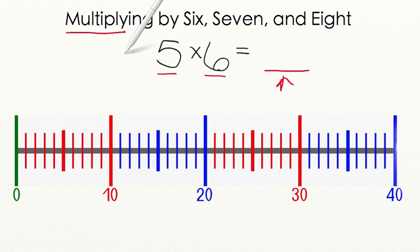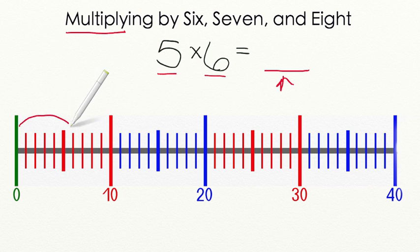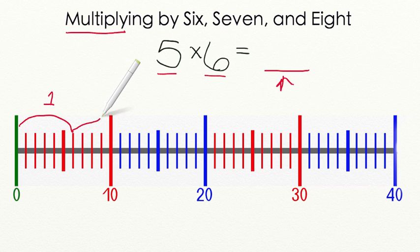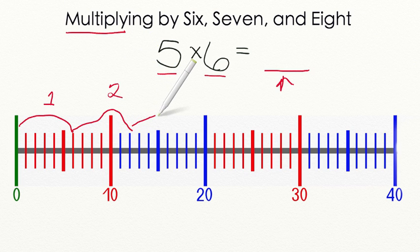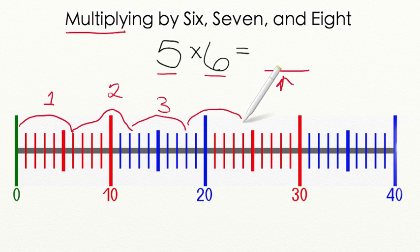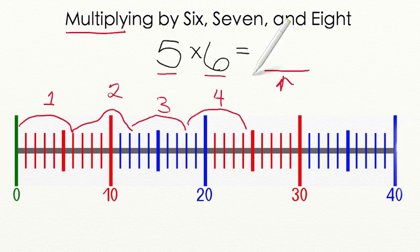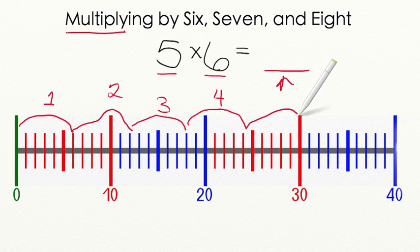Let's start by counting our first group of 6: 1, 2, 3, 4, 5, 6. So we have our first group of 6. Let's create our second group: 1, 2, 3, 4, 5, 6. Then our third group: 1, 2, 3, 4, 5, 6. Then our fourth group: 1, 2, 3, 4, 5, 6. So we have 4 groups of 6, but we need 5. So let's count 6 more: 1, 2, 3, 4, 5, 6.